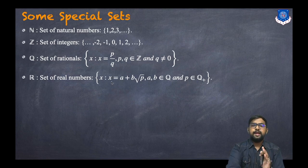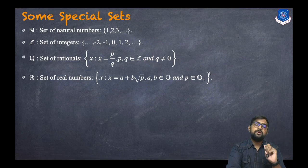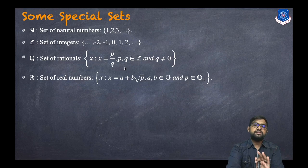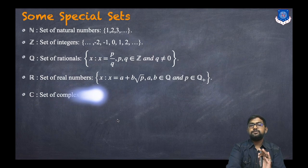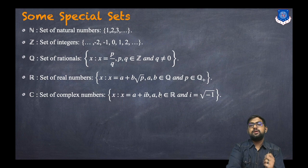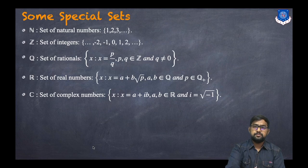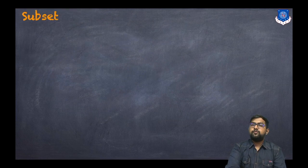R is the set of real numbers, expressed as {x : x = a + b√p, where a, b ∈ Q and p ∈ Q⁺ (positive rationals)}. C is the set of complex numbers: {x : x = a + ib, where a, b ∈ R and i = √(-1)}.